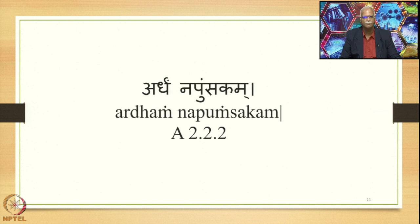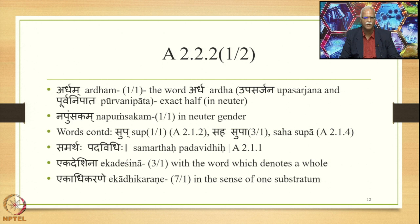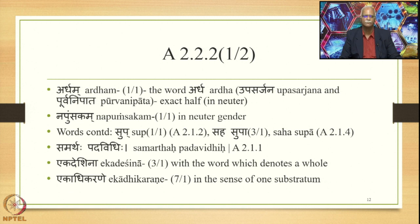The next Sutra is Ardham Napumsakam (2.2.2), which has two Padas: Ardham and Napumsakam. Ardham is the Prathama Ikavachana of the word Ardha, meaning 'half,' but when it is in the neuter gender it means 'exact half' — which is what the qualifier Napumsakam states. Napumsakam means 'in neuter gender.' The words continued are Suph Sahasupa, Samarthap Padavidhi, Ekadeshina (with the word denoting a whole), and Ekadhikarane (in the sense of one substratum).